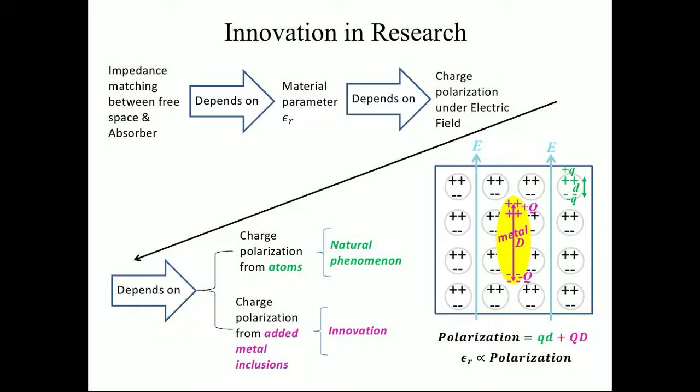As seen in the figure, you have your electric field that is passing through the material, and you have your electrons in green. Your electrons, both your protons and electrons, are separating from each other. And then you also have the innovation, which in the metal in this case, is separating the protons and neutrons. Polarization equals natural phenomenon, which is Qd in the green, plus your innovation, which is in the pink. The bigger the polarization, the bigger the epsilon r.